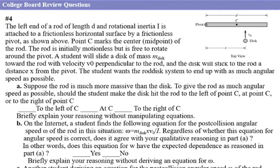Here is a question from a College Board study guide FRQ. The left end of a rod of length D and rotational inertia I is attached to a frictionless horizontal surface by a frictionless pivot. Point C marks the midpoint of the rod. The rod is initially motionless but free to rotate around the pivot. A student will slide a disc of mass M toward the rod with velocity V-sub-zero, perpendicular to the rod, and the disc will stick to the rod.